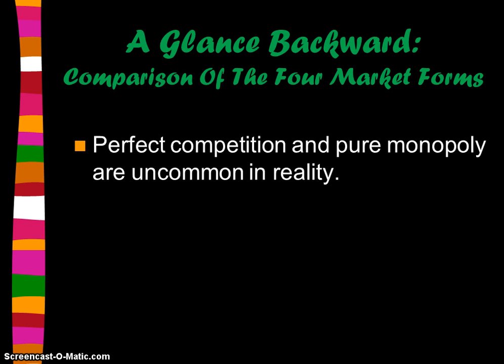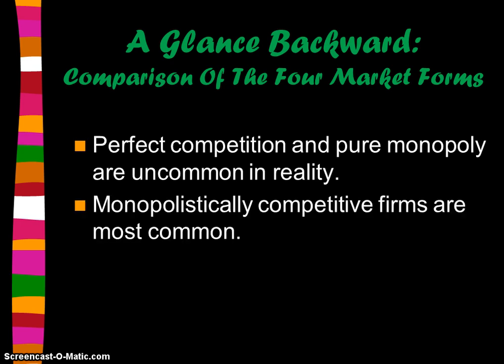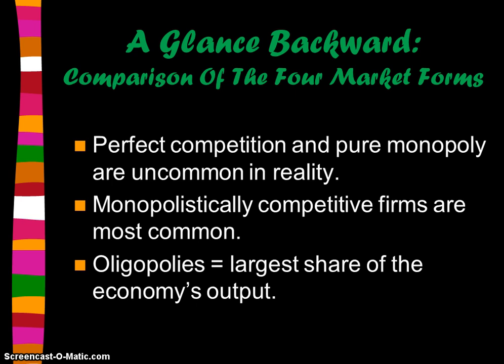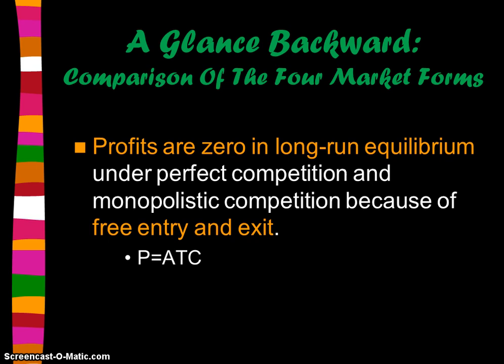Just a little review of the big things we've learned in this unit. Perfect competition and unregulated pure monopoly are uncommon in reality. Monopolistically competitive firms are the most common — that's what we see most often — but oligopolies produce the largest share of the economy's output. Profits are going to be zero in long-run equilibrium under perfect competition and monopolistic competition because of freedom of entry and exit, so they end up producing where average revenue or price equals average total cost at a normal rate of return.